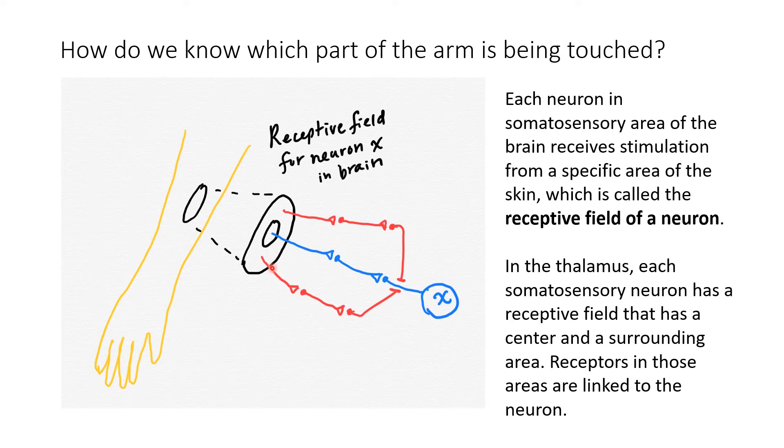while others send inhibitory signals, which are the red connections here. It's this combination of inhibitory and excitatory signals that our brain interprets to try and process all the kinds of stimulus information we're experiencing at once.